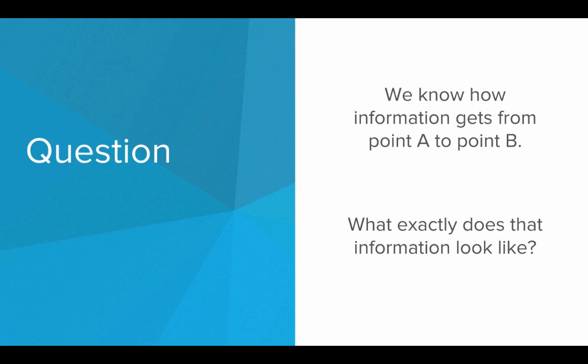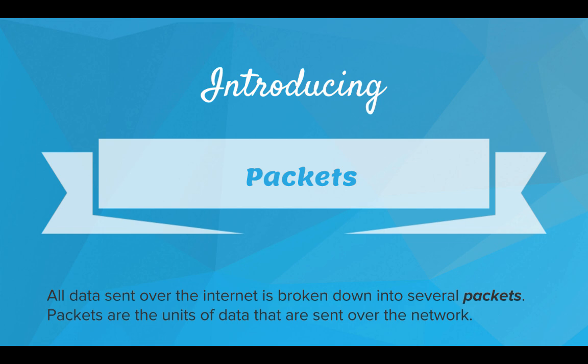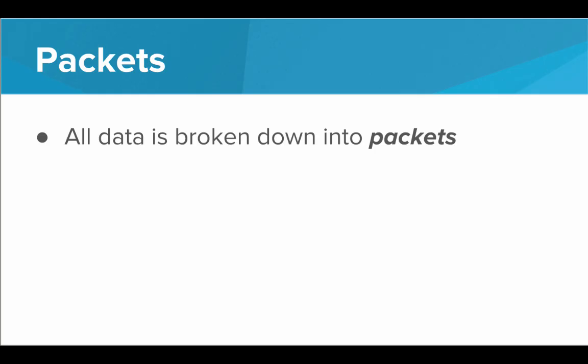So we know how information gets from point A to point B, but what exactly does that information look like? What is being sent? How are those zeros and ones actually set up? Well, introducing packets. All data sent over the internet is broken down into several packets — packets are the tiny units of data sent over the network. Think about it this way: let's say you had to send something really big across the country. Let's say you built a house in Texas and needed it to get all the way to California. You wouldn't pick up that entire house, put it on a truck, and send it to California. You would break down that house into several different pieces, put it on several different trucks, and all of those trucks would drive to the same final destination. Each one could possibly take a different path as well.